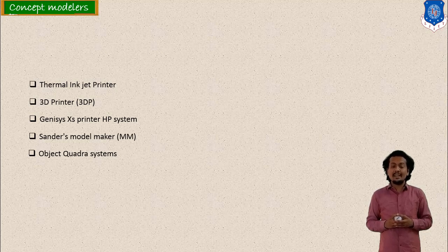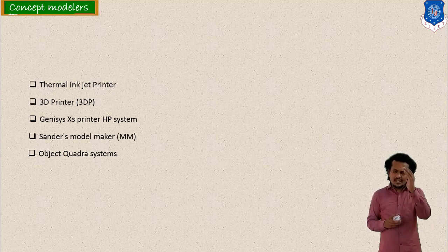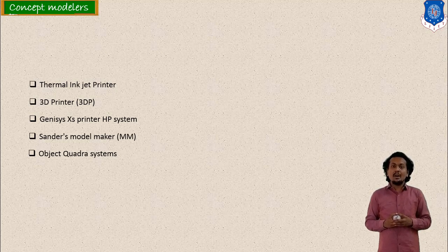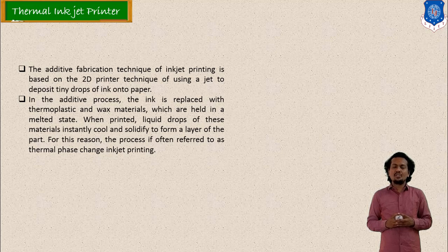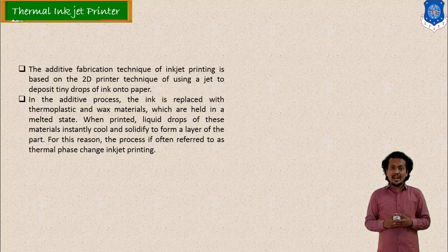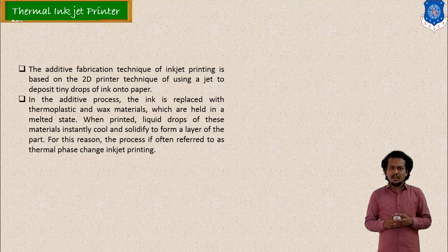The various concept modelers mentioned include: the Thermal Ink Jet Printer, the 3D printer which is also very famous, the Genesis Access Printer System, the Sanders Model Maker, and the Object Quadra System. These are the basic modelers developed, and our purpose is to make a model with different materials like plastic to check the concept. The first one is the Thermal Ink Jet Printer, which is used for making a small-scale or concept model.